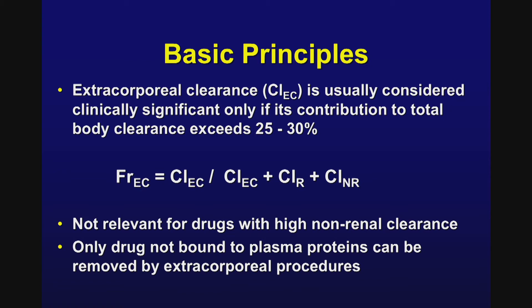Extracorporeal clearance is not relevant for drugs with high non-renal clearance — drugs like morphine, labetalol, and midazolam that are effectively removed by the liver due to hepatic blood flow would not be expected to be removed by a CRRT circuit. Only drug not bound to plasma proteins can be removed by extracorporeal procedures — only the unbound or free fraction is removed. In critical illness, albumin declines due to reduced synthesis or extravascular loss, potentially increasing the free fraction of albumin-bound drugs. Conversely, alpha-1-acid glycoprotein is elevated in critical illness, potentially reducing the free fraction of drugs bound to it.